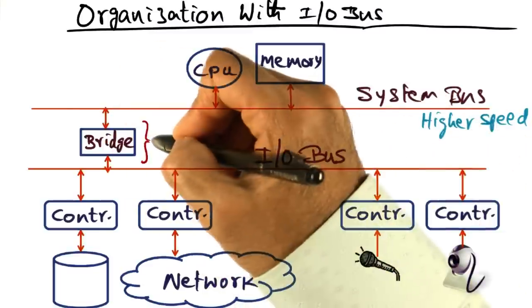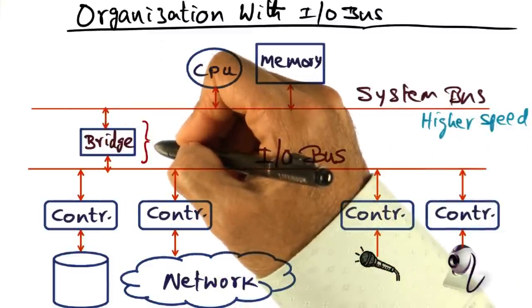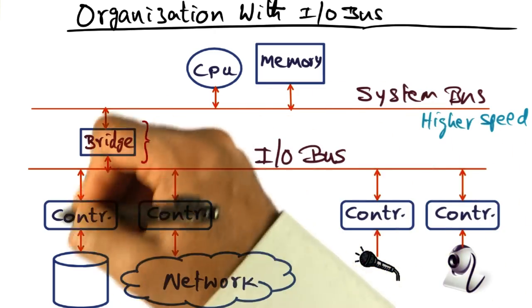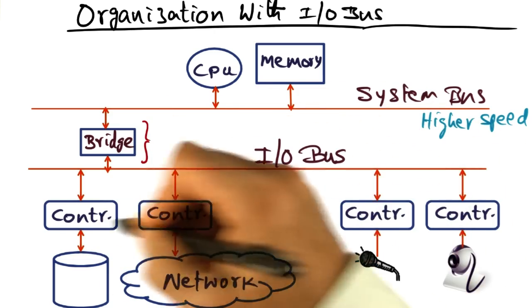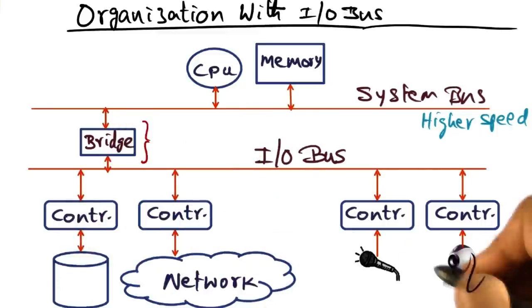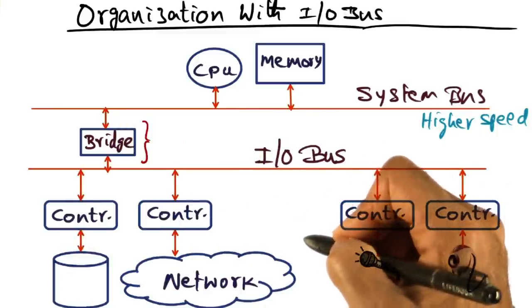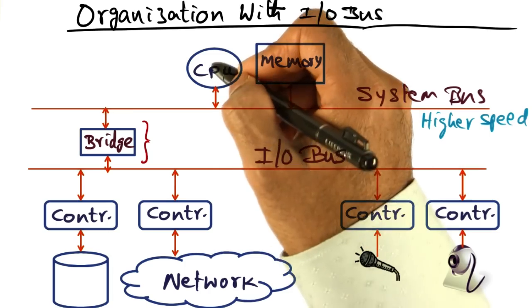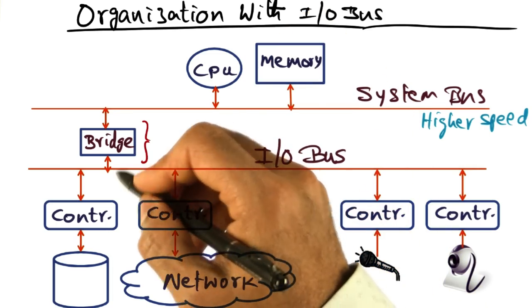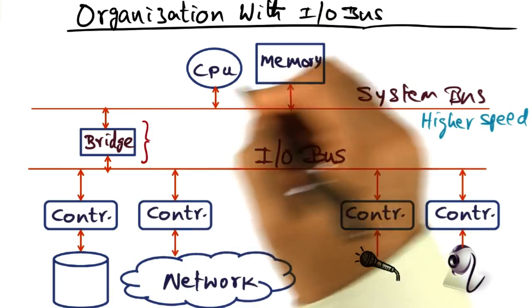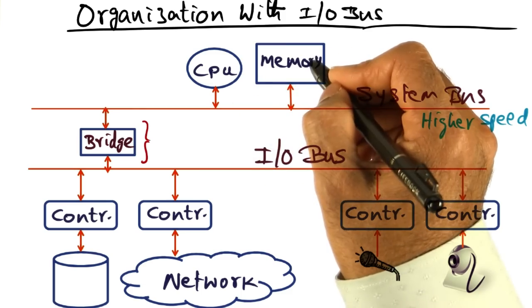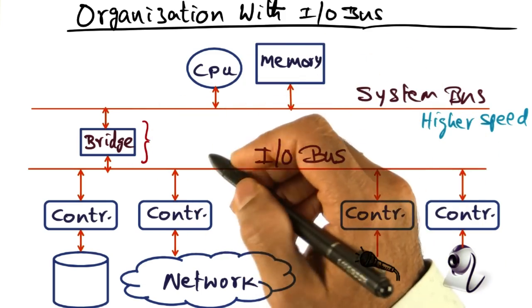So the role of the bridge is like a processor in itself, controlling who has access to this IO bus among the set of devices that may be competing at the same time for attention by the CPU, and communicating the intent of these IO devices either directly with the memory or via the CPU.